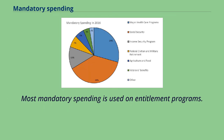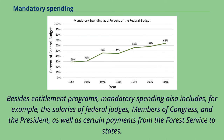Most mandatory spending is used on entitlement programs. Besides entitlement programs, mandatory spending also includes, for example, the salaries of federal judges, members of Congress, and the President, as well as certain payments from the Forest Service to states.